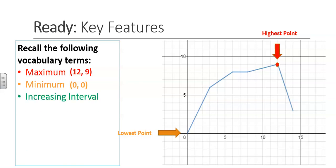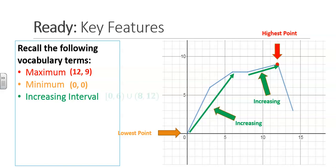An increasing interval is where the function is increasing. In this function, it is increasing in two places. We will say that the interval that's increasing is from 0 to 6, with 0 included, union 8 to 12.